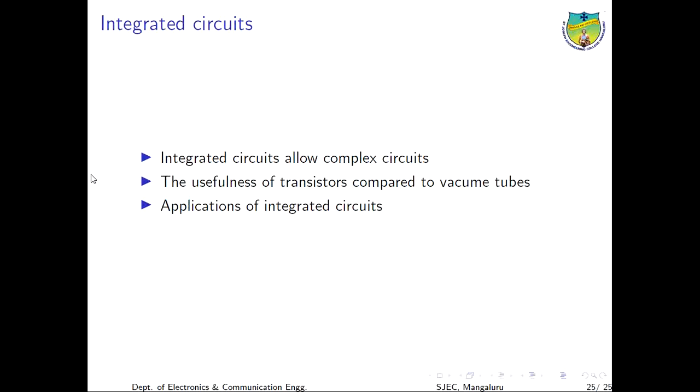Integrated circuits or ICs allow complex circuits consisting of millions of transistors, diodes, resistors and capacitors to be included in a single chip. Earlier vacuum tubes were being used to build electronic devices but because of their complexity they were replaced with transistors.